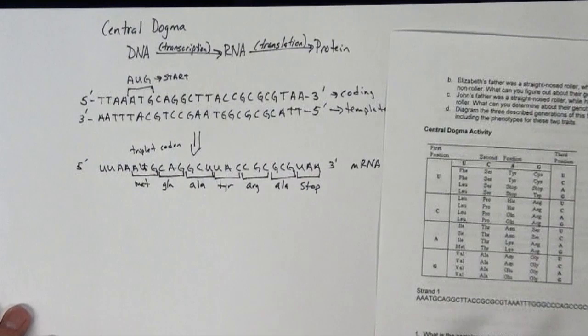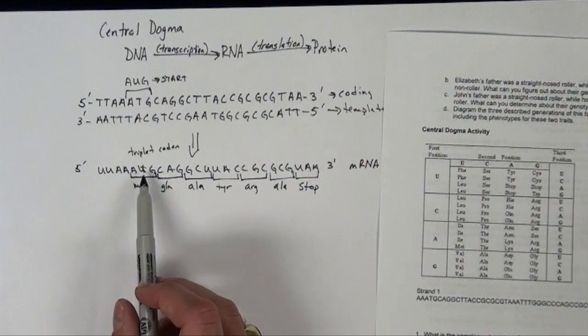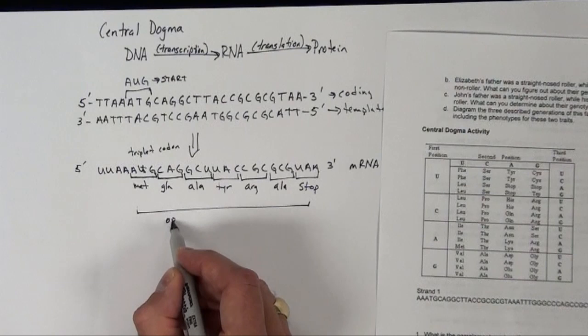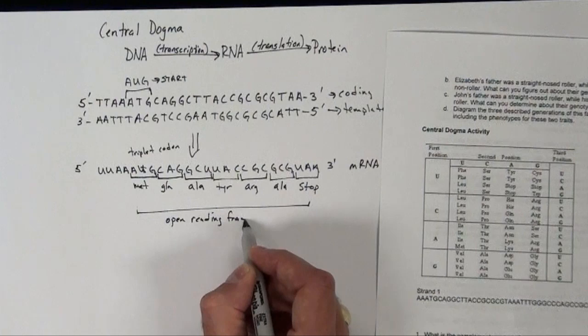There's actually 3 stop codons. So once again, we're going to have a start, and we have a stop. And then what we have defined here is actually the open reading frame of this particular gene or code of DNA.